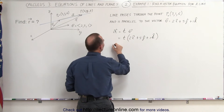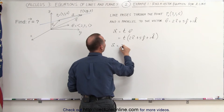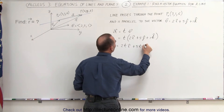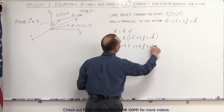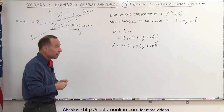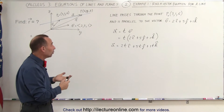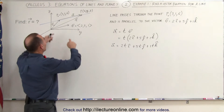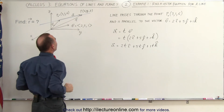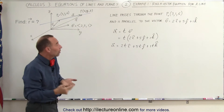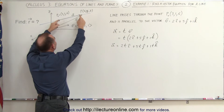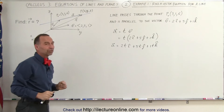This means that vector a can be written as 2t in the i direction, plus 5t in the j direction, plus 1t in the k direction. Remember that t is simply a constant — it can be bigger than 1, equal to 1, or smaller than 1. If it's bigger than 1, that means the distance from this point to this point is larger than the magnitude of v. If t is smaller than 1, then the distance from the known point to the arbitrary point is smaller than the length of vector v.